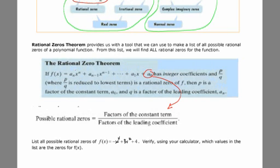Then we take the leading coefficient, this guy, and write all the factors of it in the denominator. Then we take every possible combination of the numerator factors divided by the denominator factors.